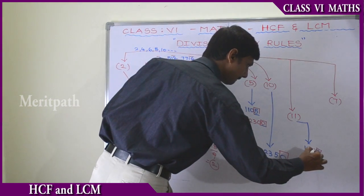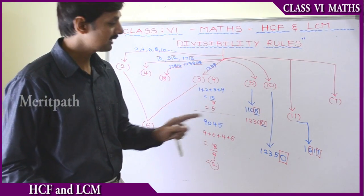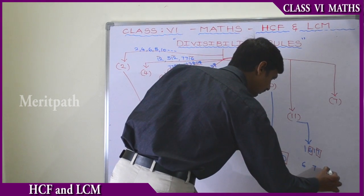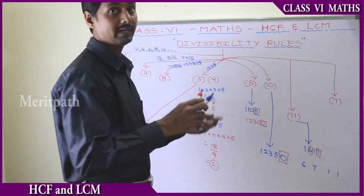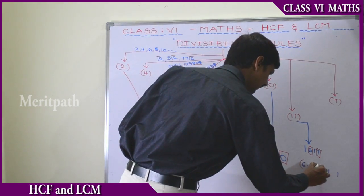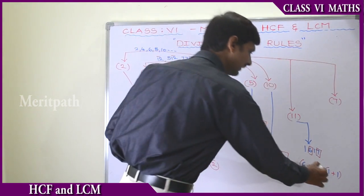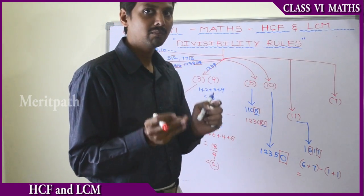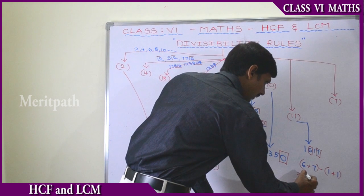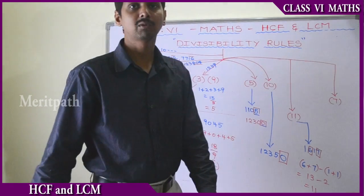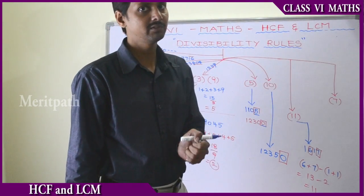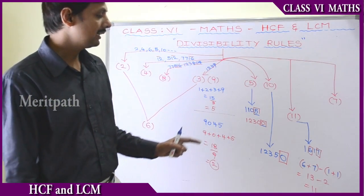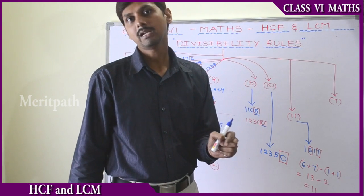For the number 1617: odd-place digits are 7 and 6, giving a sum of 13. Even-place digits are 1 and 1, giving a sum of 2. The difference is 13 minus 2 equals 11, which is a multiple of 11. So we got a multiple of 11, and that is the reason the whole number 1617 is divisible by 11. Either we get a multiple of 11 or the number 0 — then the whole number is divisible by 11.